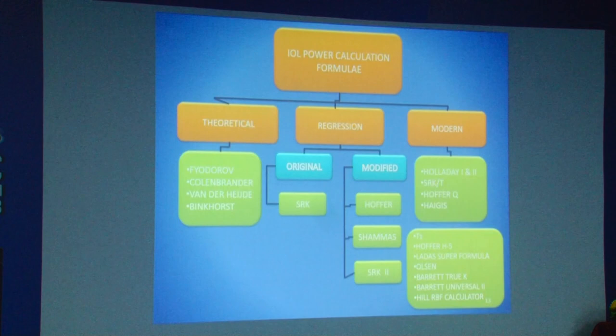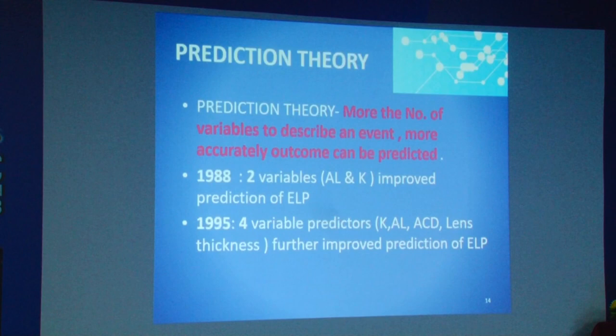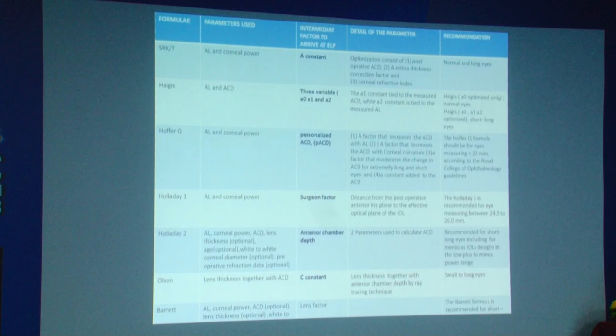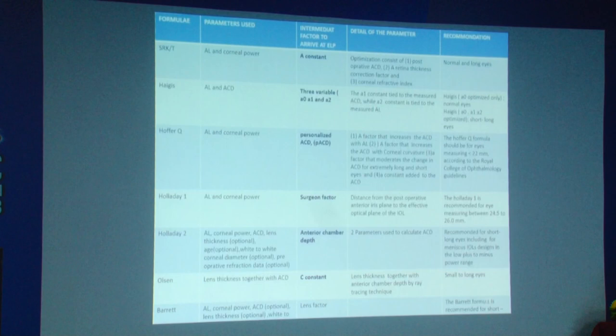What are these new formulas? Hoffer Q5, Ladas Olsen, Barrett Universal 2, and Hill RBF calculator. Prediction theory says more variables used to describe an event, the more accurately the outcome can be predicted. We have gone from two parameters — axial length and keratometry in 1988 — to four parameters in Olsen, five in Barrett Universal 2, and seven in Holliday 2. Artificial intelligence is used in Hill RBF, and ray tracing in Oculix and ZEISS OPTI.